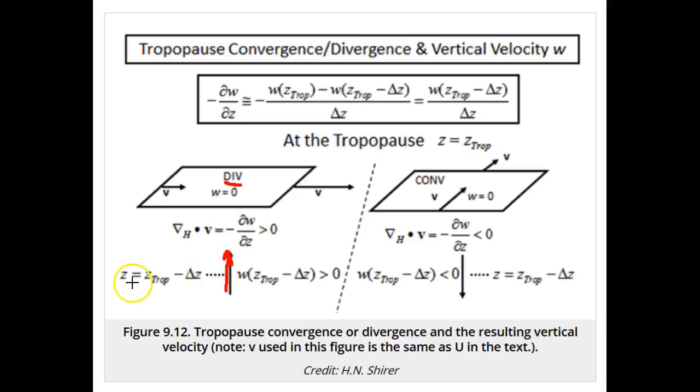Mathematically, this means that w must be positive. But we know that it must go to zero at the tropopause.